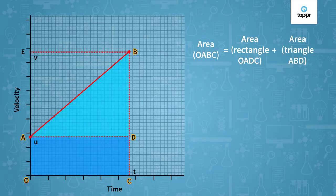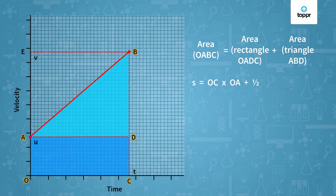So we can say that the area O, A, B, C — which is basically the distance S — is equal to the area of the rectangle, which is OC multiplied by OA, plus the area of the triangle, which is half into AD into BD, that is half into base into height.